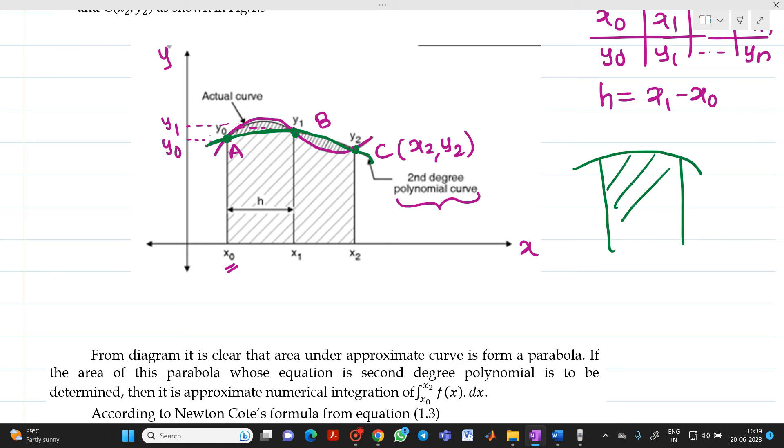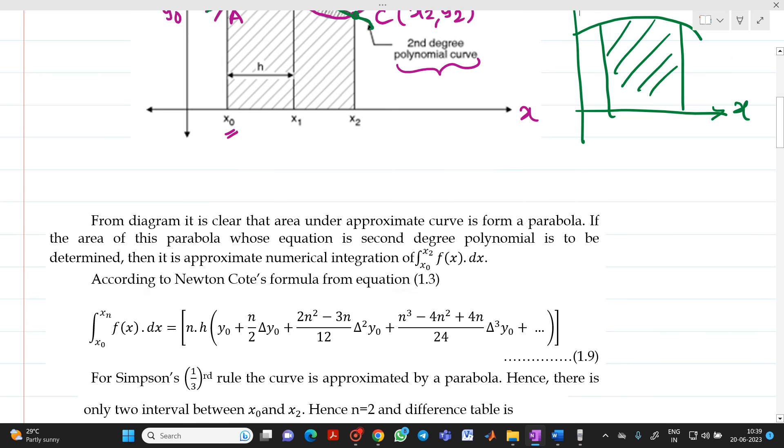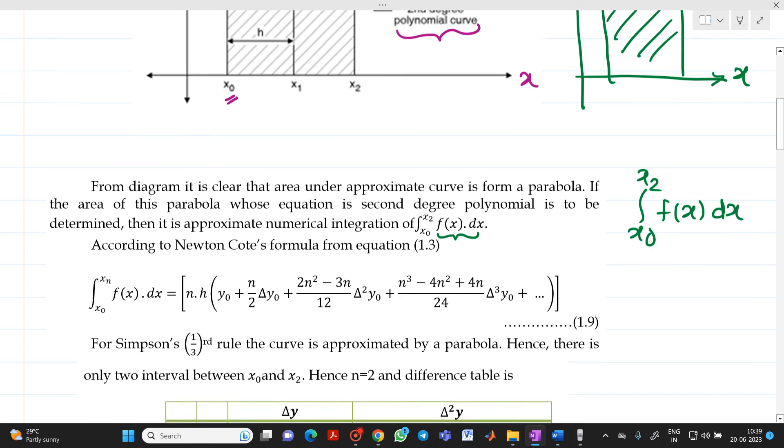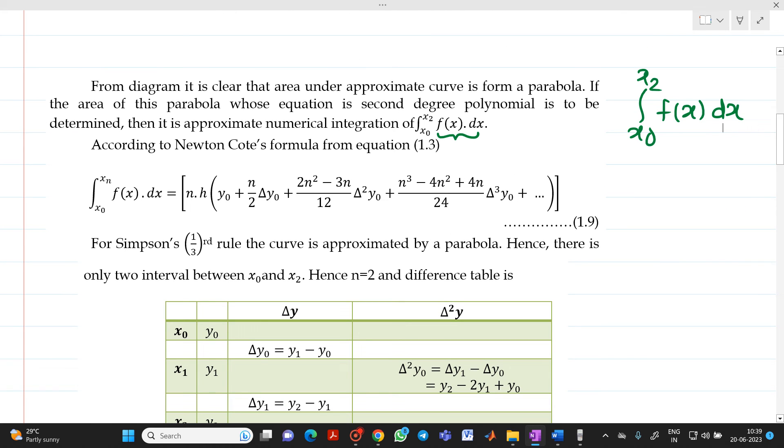You see, this will be the area under the curve. Suppose, this is your x-axis and this will be your y-axis. Now, that parabola is the second degree equation. That is, we will have a function with a limit as x0 to x2 f(x) dx. Now, we know, what is Newton's Cotes quadrature formula? Already, we have derived it.